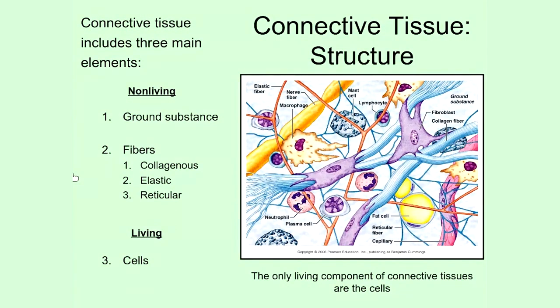Collagen is actually stronger than steel of the same size. Because it's so strong, when you find collagen in connective tissues, it tends to make those tissues really strong and capable of binding structures together in the body. The second type of fiber is what's known as elastic fiber. If you look at this diagram, you'll notice these thinner fibers represented in orange that are interspersed throughout this tissue — these are the elastic fibers.